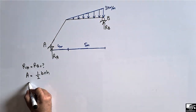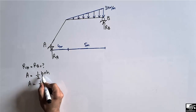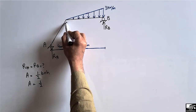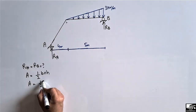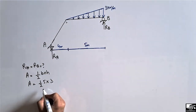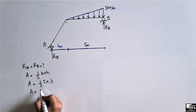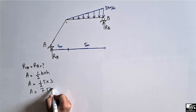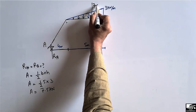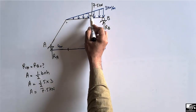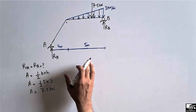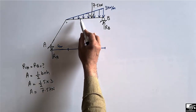The area of the triangle is found using the formula: half × base × height. The base is 5 meters (the horizontal length) and the height is 3 kN/m, so the area equals ½ × 5 × 3 = 7.5 kN. This 7.5 kN concentrated load acts at the centroid of the triangle. This completes our first step.